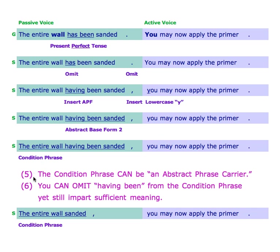Key point five: the condition phrase can be an abstract phrase carrier — it contains the abstract base form within it. Point six: you can omit having been from the condition phrase and it still imparts sufficient meaning. People do that all the time in speech — the mind quickly goes to: 'The entire wall sanded, you may now apply the primer.' We speak elliptically, as concise and quickly as possible.